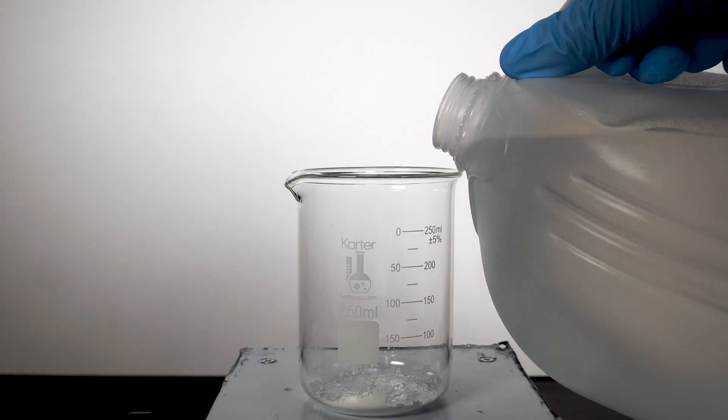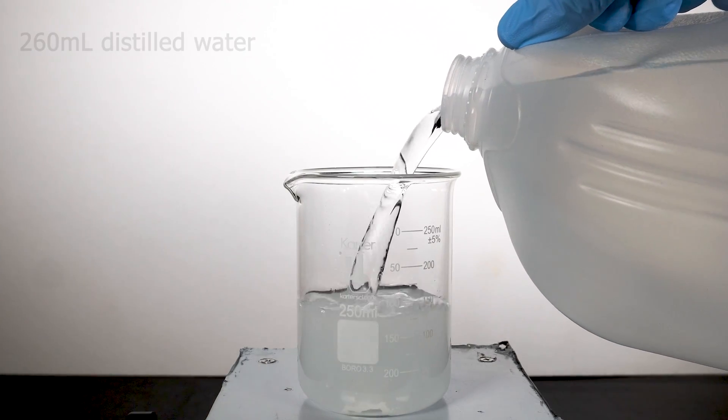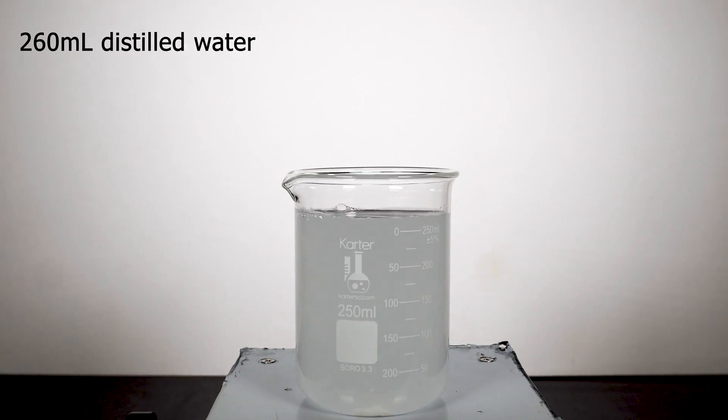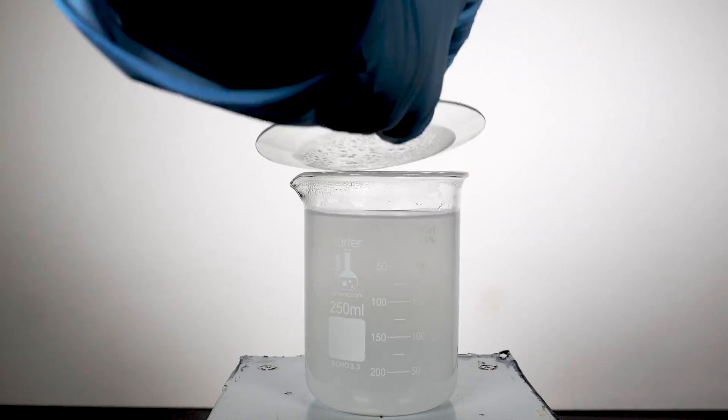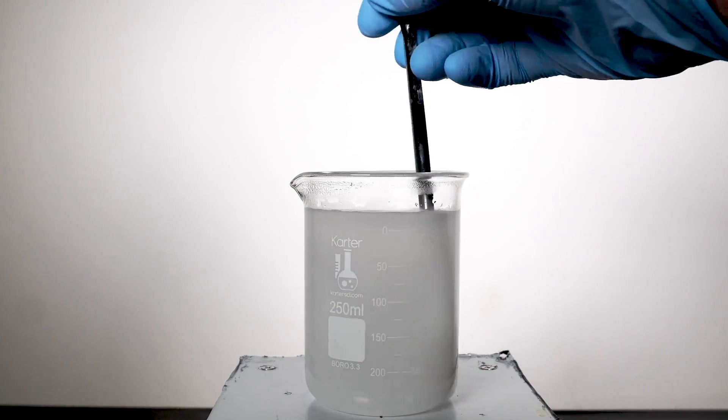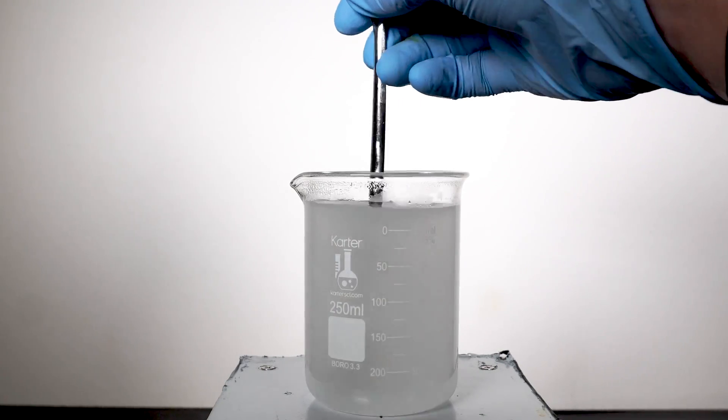After this, we need to dissolve most of the cornstarch in water, so I add about 260ml of water to the beaker. The real problem is that cornstarch is not really soluble in water, and to make most of it dissolve, we have to heat it up. This is where a microwave really comes in handy, and after about a minute and 30 seconds, almost all of the cornstarch is ready to dissolve.